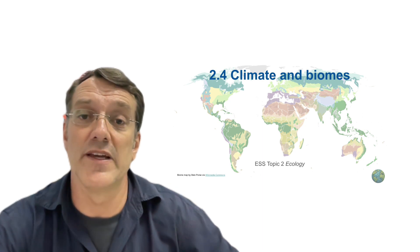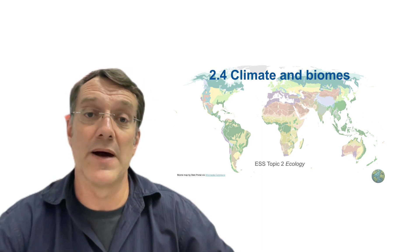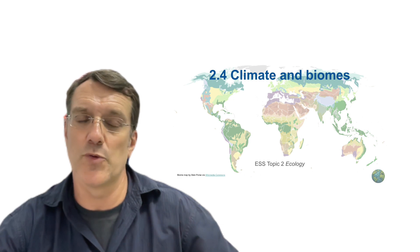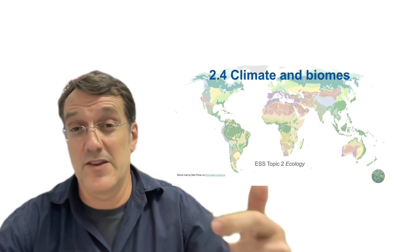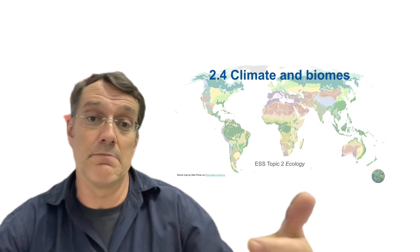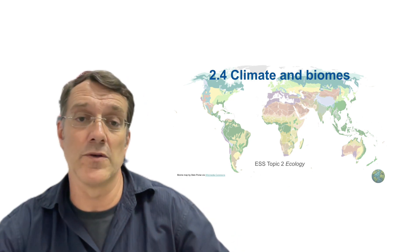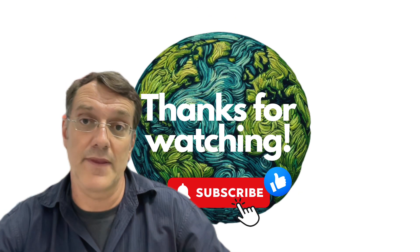That's it for Standard Level ESS Topic 2.4, Climate and Biomes. If you can explain the relationships between climatic factors like light, temperature, and precipitation with the productivity and biodiversity of different biomes around the world, you're going to do just fine on your ESS exams. Until next time, happy learning.